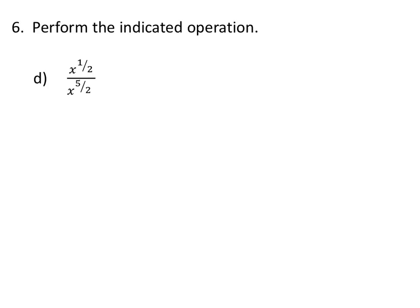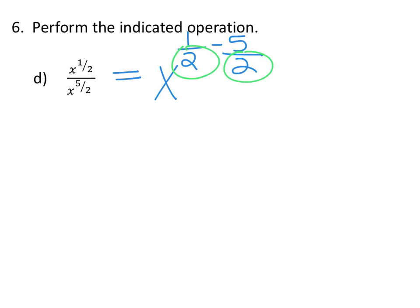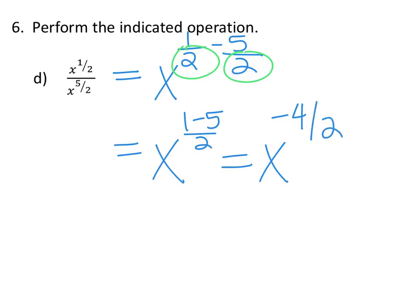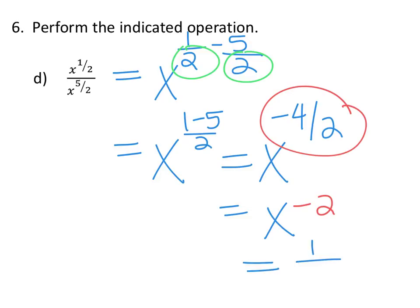To solve this operation we need to subtract the exponents. So we're going to start with keeping the base, which is x raised to 1/2 minus 5/2. When we subtract fractions we need to make sure we have common denominators, which we do in this case. So we keep the denominator the same and subtract the top. We get x raised to negative 4/2. Negative 4/2 is negative 2, so we have x raised to the negative second. We don't want a negative exponent, so we move it to the bottom — our final answer is 1 over x squared.